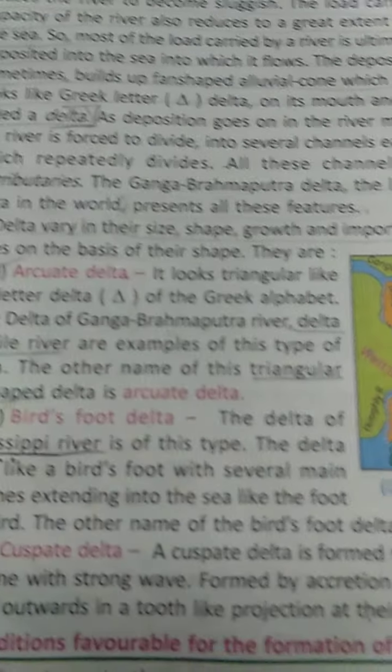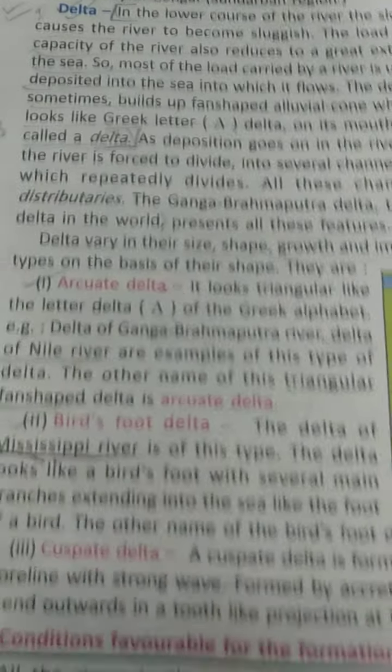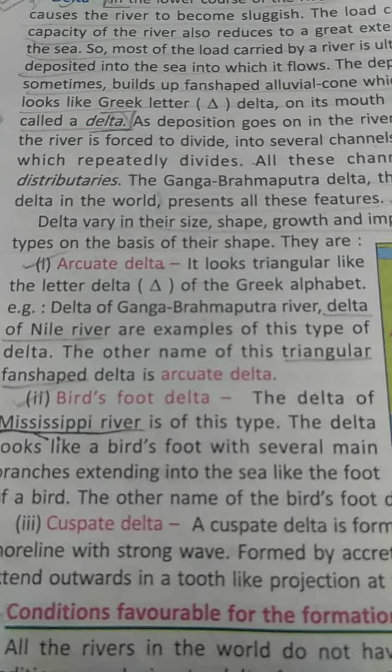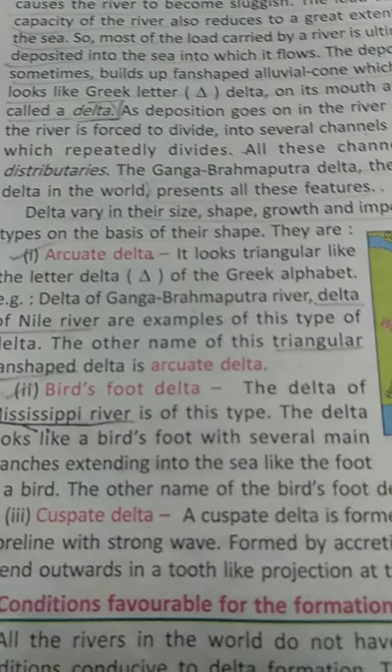Class 9. Last day I told you what a delta is. Today I will tell you how many types of delta there are. There are three types of delta.